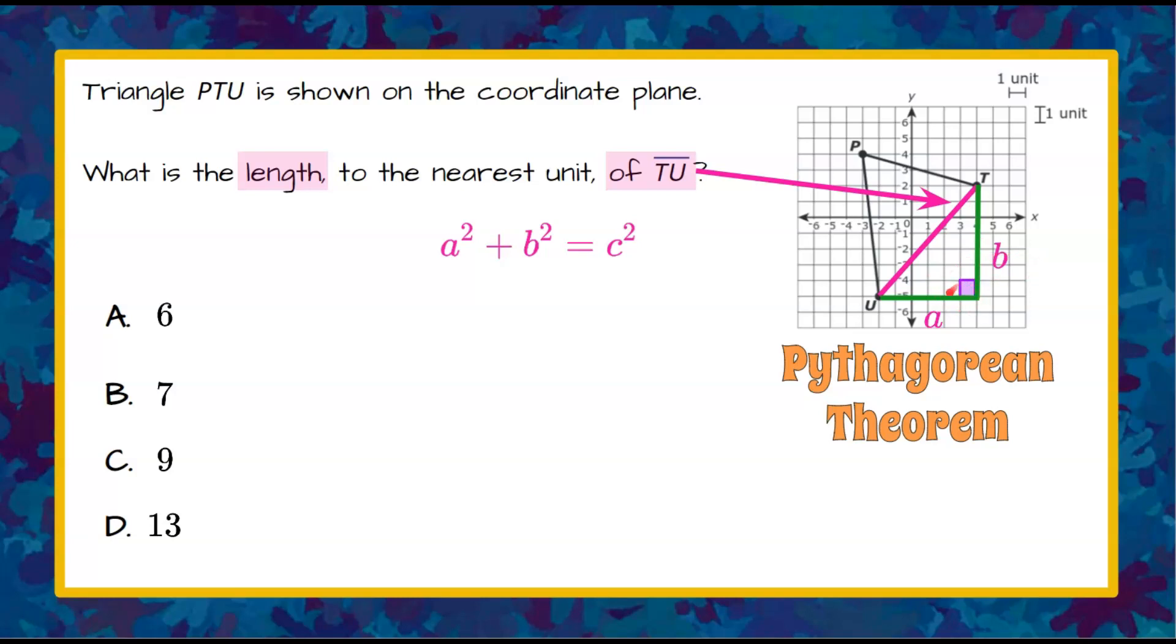So we have our right angle here. So A and B are the legs that form that right angle, and they correspond to this in the Pythagorean Theorem. C is the hypotenuse, which is directly across from the right angle and is always the longest side of your triangle.